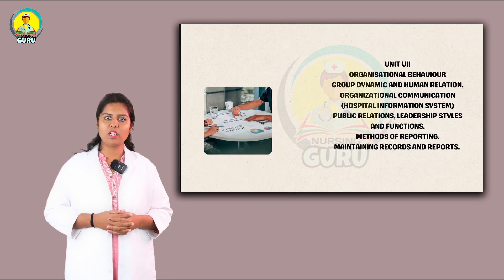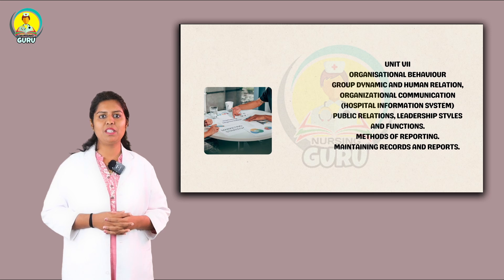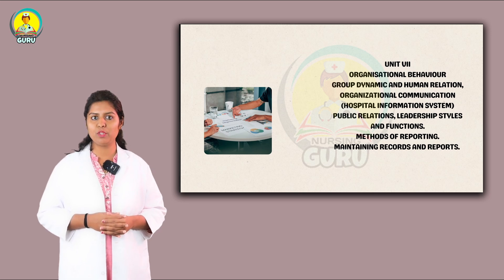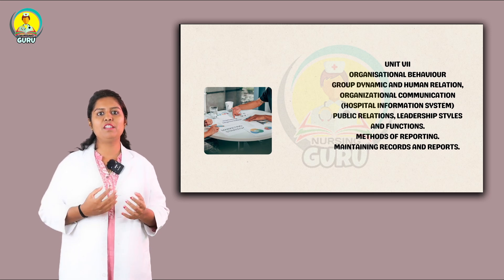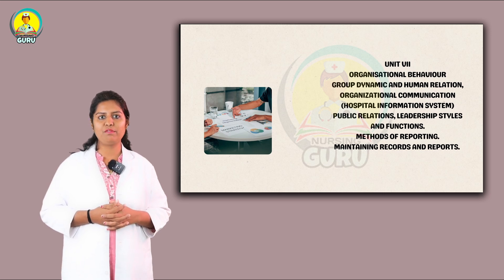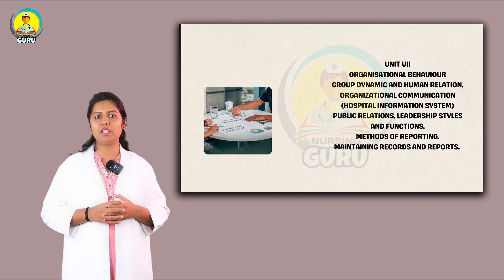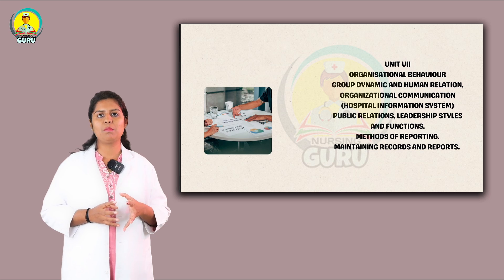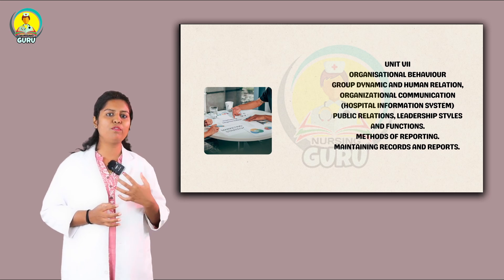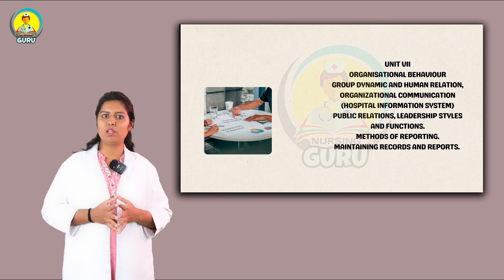Next is Unit 7: Organizational Behavior. Topics include group dynamics and human relations, organizational communication, hospital information system, public relations, leadership styles and functions, methods of reporting, and maintaining records and reports. Records and reports is very important — sometimes they will ask for 10 marks and sometimes for 5 marks. So you need to study records and reports thoroughly.